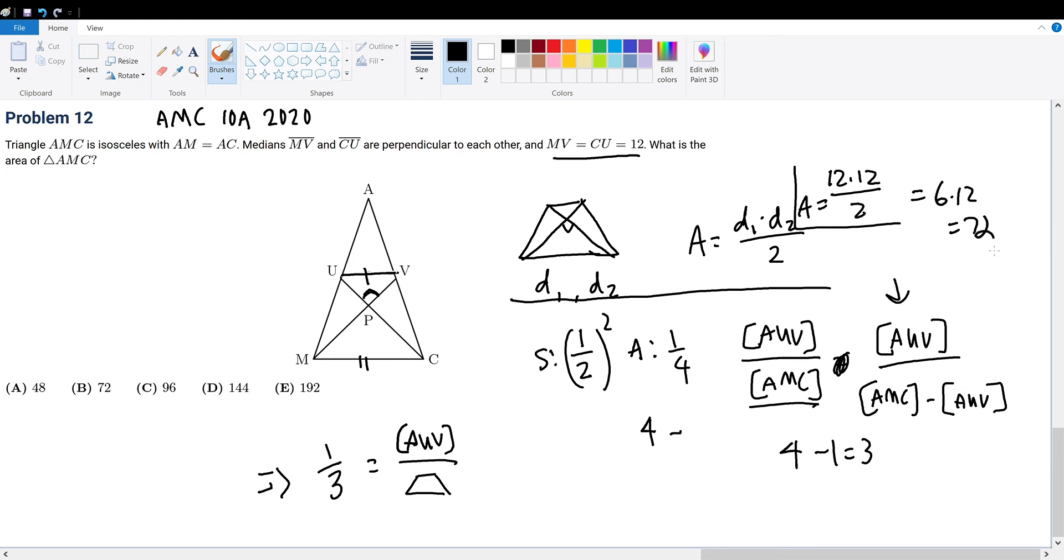It will be equal to AUV over 72. Multiply 72 on both sides to isolate AUV, so AUV equals 72 over 3, which is 24.